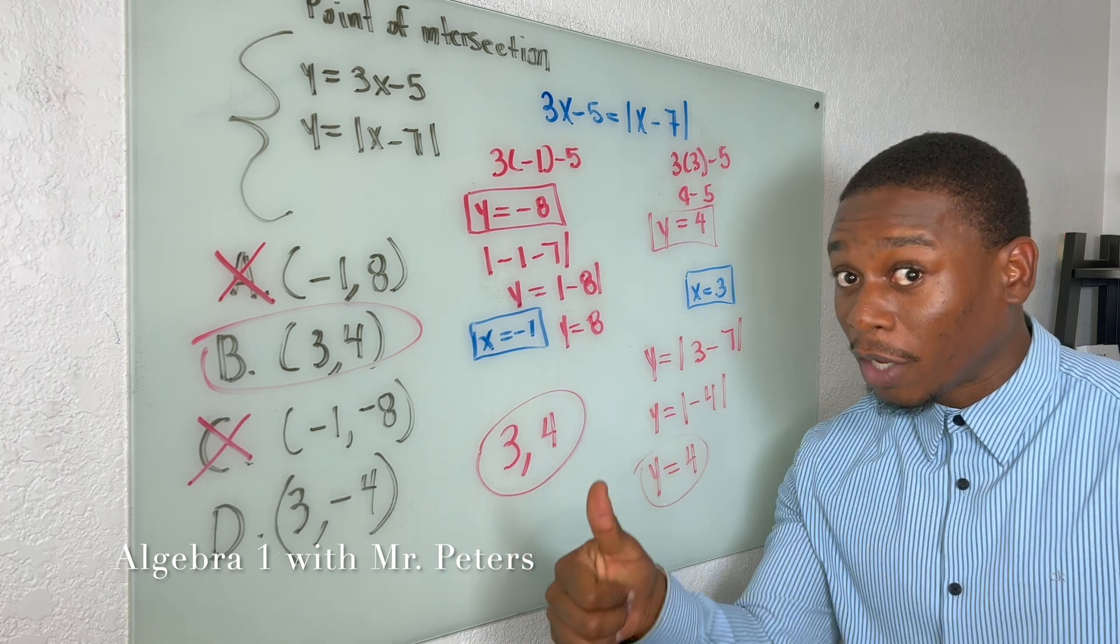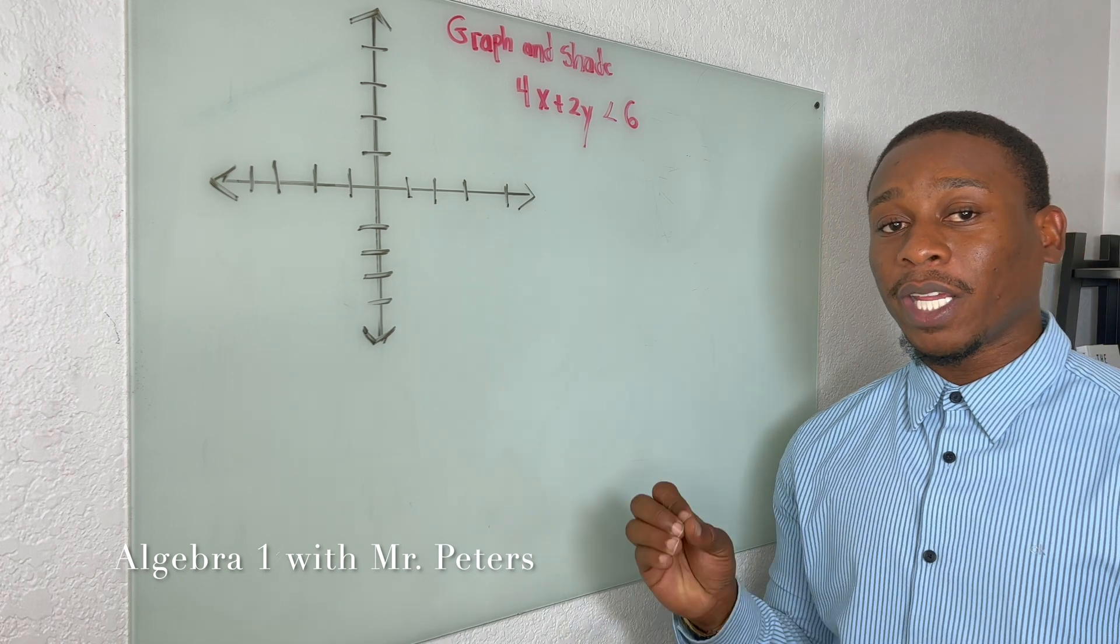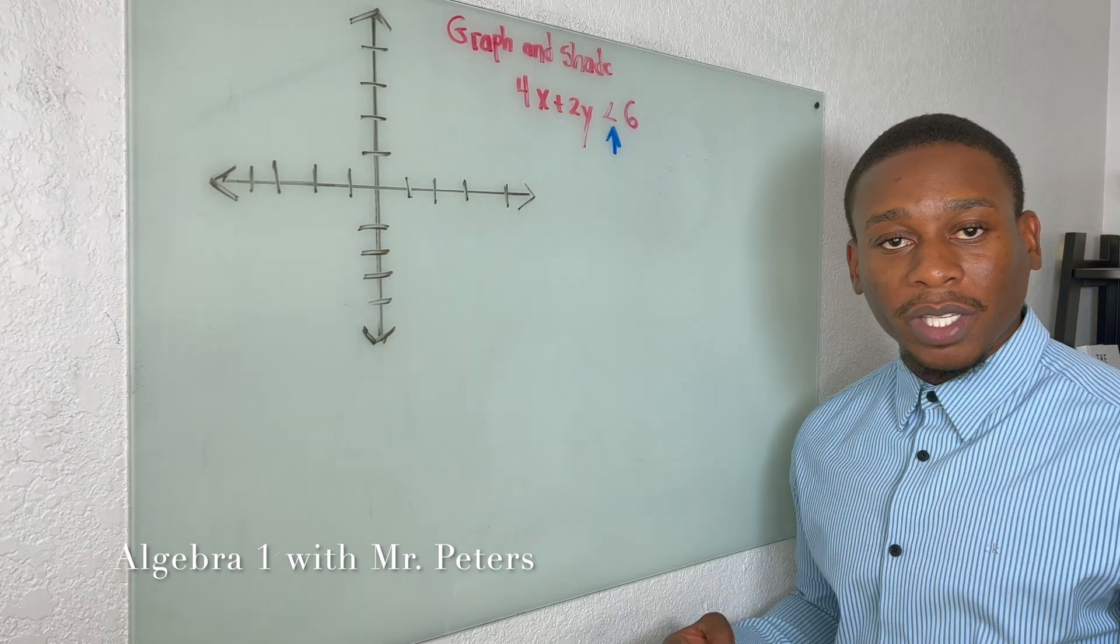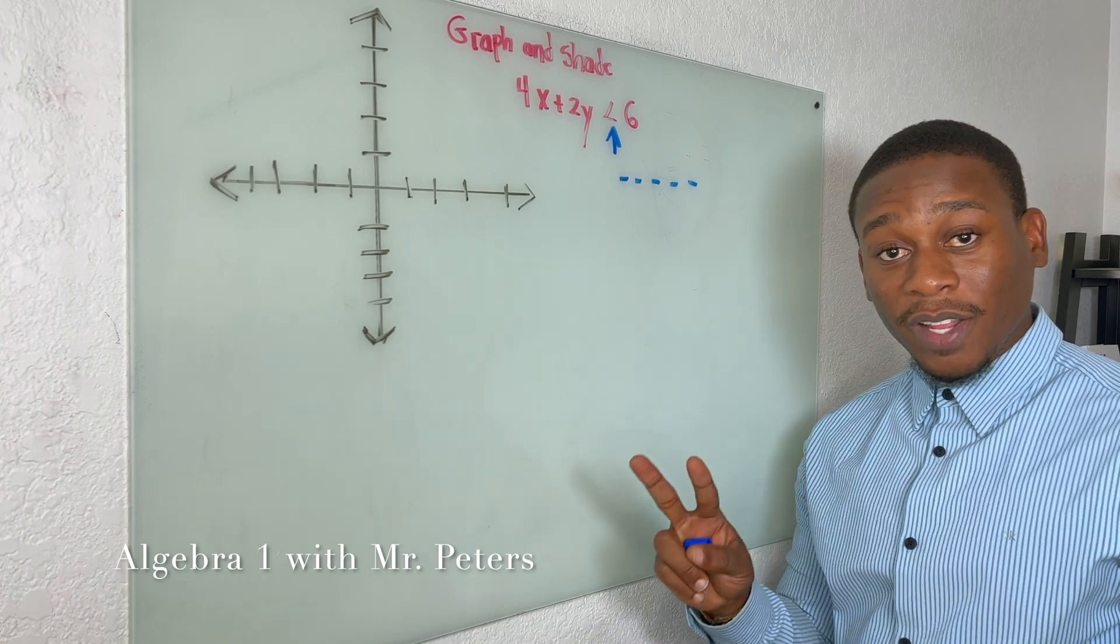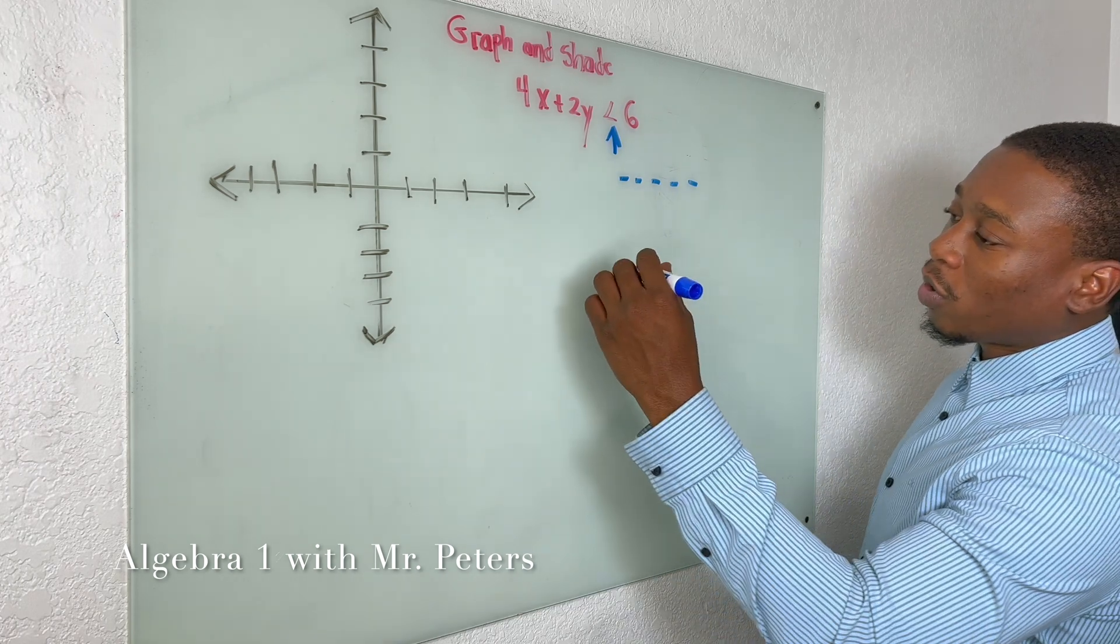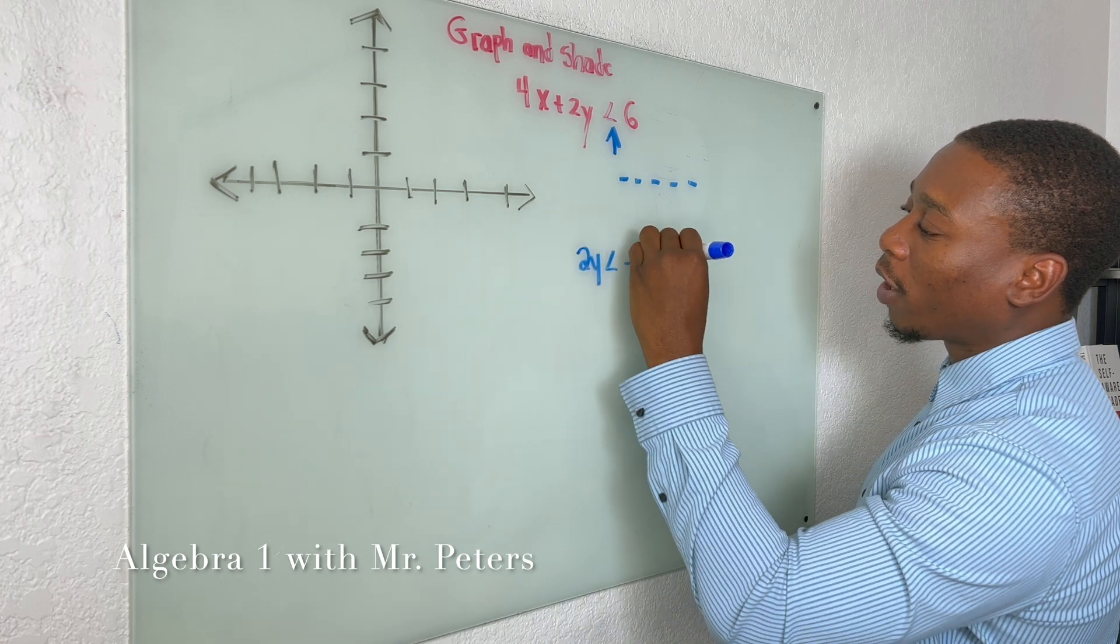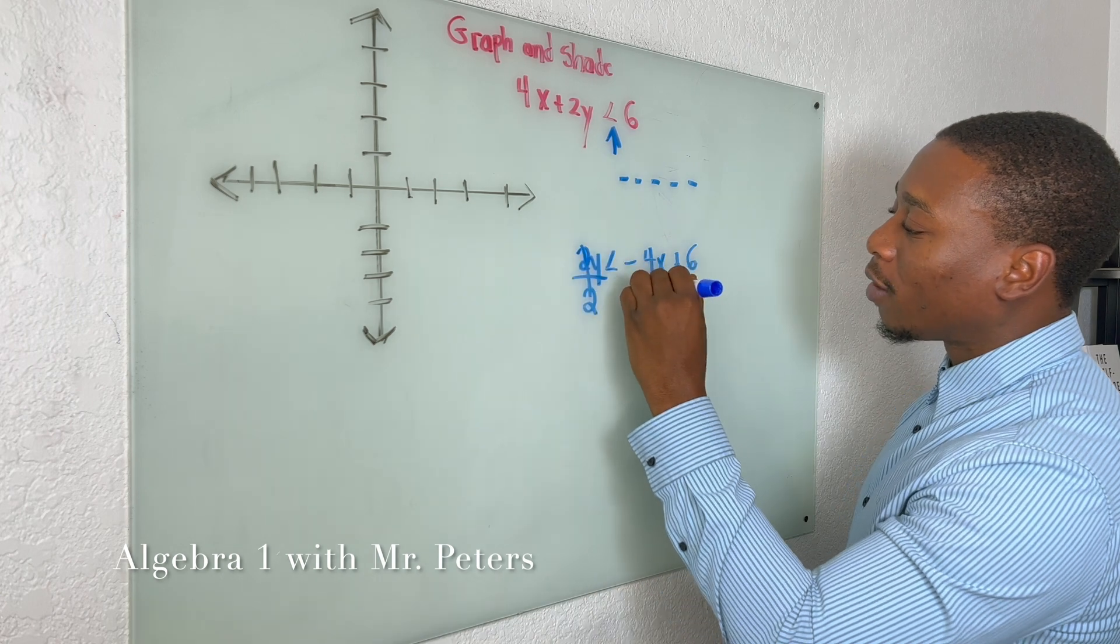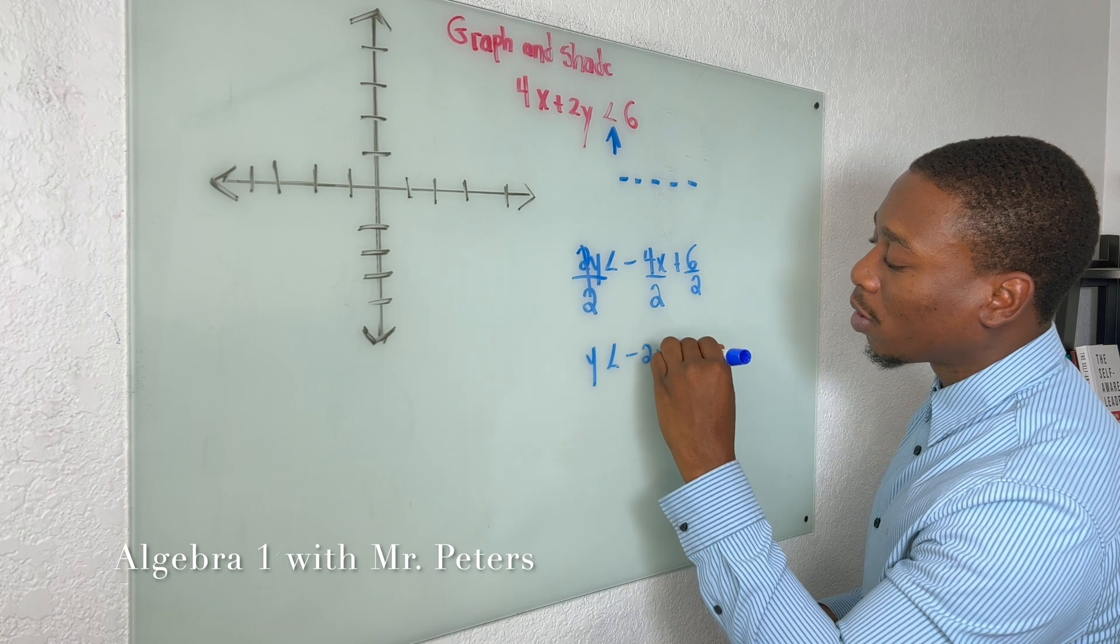On to problem number three guys, we're talking about graphing and shading inequalities. Number one, what we need to know is because it's just greater or less than, we're going to have a dashed line. So if it's multiple choice, those two answers that are solid lines, eliminate them. So there's two ways we could do this. The first way, we could subtract 4x and have 2y < -4x + 6, right? Get in the slope-intercept form, go back, divide by 2, and get y < -2x + 3.